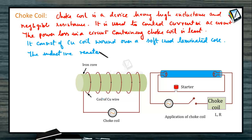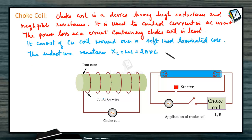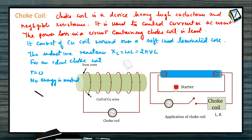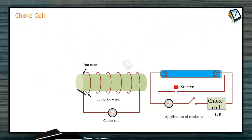The inductive reactance XL = ωL = 2πνL. For an ideal choke coil, R = 0, so no electrical energy is wasted and average power is 0. A coil with low resistance and high inductance can reduce the current in AC. The choke coil is preferred because it does not dissipate power. It is a coil of insulated copper wire which offers high reactance to AC.